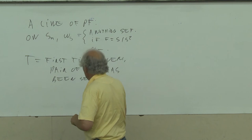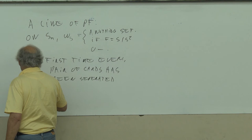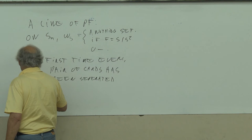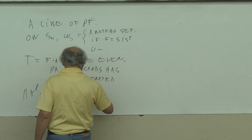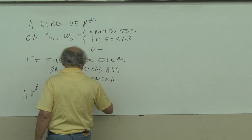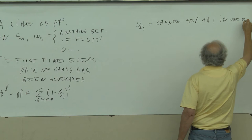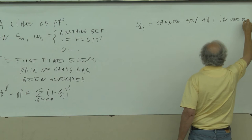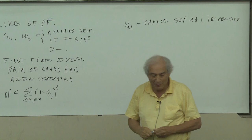What's the mixing time? By the coupling bound, KL from any start minus π is at most the sum over 1 ≤ i < j ≤ n of (1 − θ_{ij})^l, where θ_{ij} is the chance that you separate i and j in one step. You have to compute that for your individual weights. The general argument is just a geometric version of this coupling argument, but you need the geometry of hyperplane arrangements.